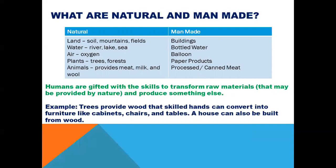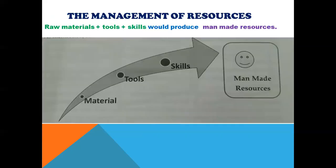For man-made resources, consider buildings — making a building requires different natural resources such as soil and wood from trees. Bottled water makes use of natural water, and balloons use air. We also have paper products. These are all examples of man-made resources. Humans are gifted with the skills to transform raw materials provided by nature and produce something else. For example, trees provide wood that skilled hands can convert into furniture like cabinets, chairs, and tables. A house can also be built from wood.